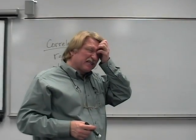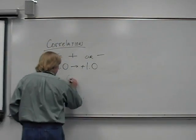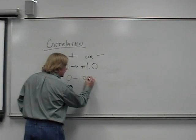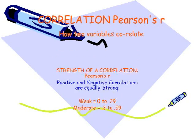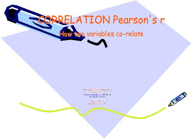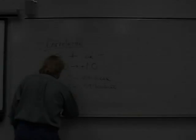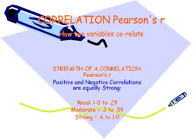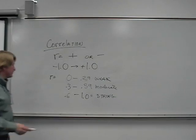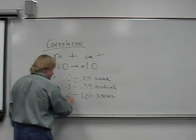This is not telling you that something is statistically significant — that's another issue. All this is telling you is how strong the relationship is. A 0 to .29 in Pearson's R is a weak relationship, whether it's 0 to 0.29 or 0 to minus 0.29. A 0.3 to 0.59 is a moderate relationship. A 0.6 to 1.0 is a strong correlation. Most sociological models find something in this middle to upper range.